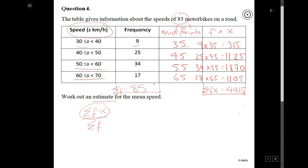So to work out your estimated mean, it's going to be the total of your fx divided by your total of frequencies. So it will just be 4415, which has come from here, divided by your total frequency, which comes from here, which is 85, and that gives you 51.9. I've rounded that up. And so my answer would be 51.9 kilometers per hour. And that's four marks. Nicely done.